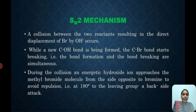During the collision, an energetic hydroxide ion approaches the methyl bromide molecule from the side opposite to the bromide to avoid repulsion — 180 degrees to the leaving group. A backside attack is possible.